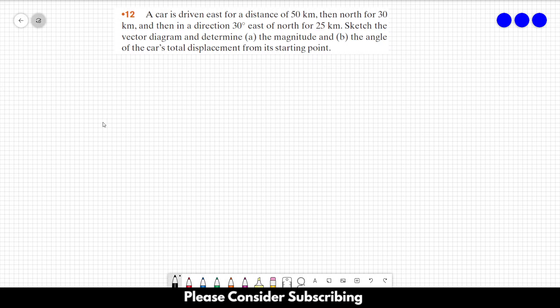So let's first draw the movement. Let's say the starting point is this point over here. And first the car goes to the east for 50 kilometers. So this is 50 kilometers. And let's say that our x and y plane is like this. So we can say that this is vector A equals to 50 in the i direction kilometers.